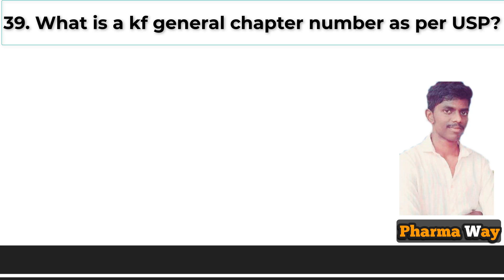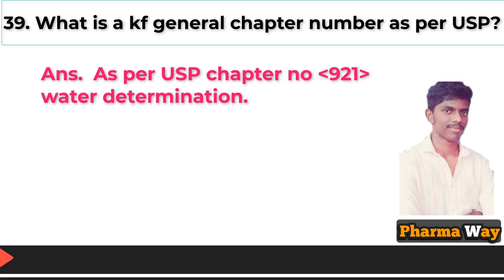What is the KF general chapter number as per USP? Answer: As per USP, the chapter number is 921, water determination.